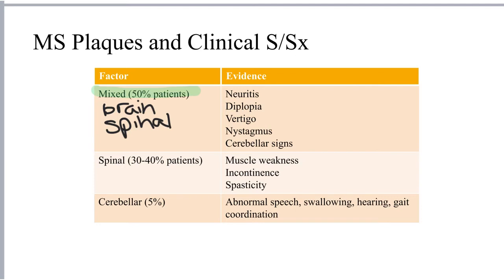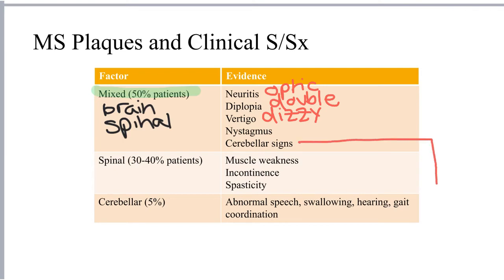The symptoms associated with this mixed presentation are wide-ranging and affect many different functions. You may observe things like optic neuritis, which is inflammation of the optic nerve, diplopia or double vision, vertigo or dizziness, nystagmus or involuntary eye movements, as well as signs involving cerebellar function — such as abnormal speech, swallowing, hearing, and gait.